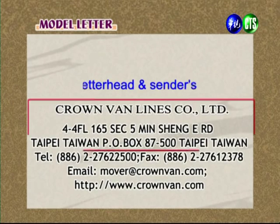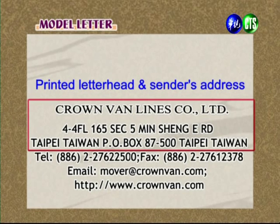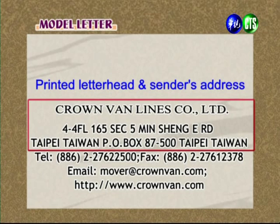Next we look at the letter layout. A letter layout typically begins with a printed letterhead — for example, a company like Crown Van Lines Limited has its address and contact information pre-printed. This is the printed letterhead, which contains all the sender's address information. It's very formal and most companies have this.